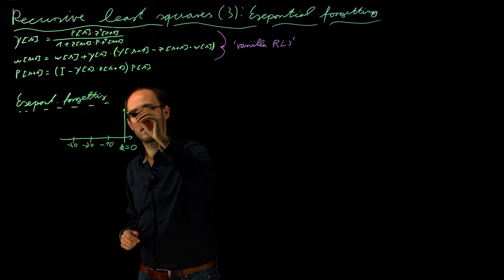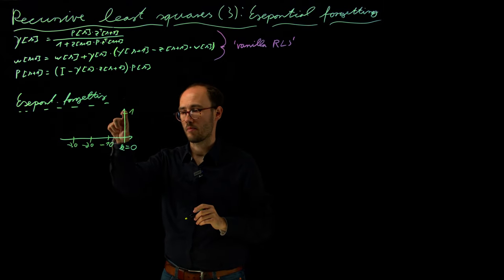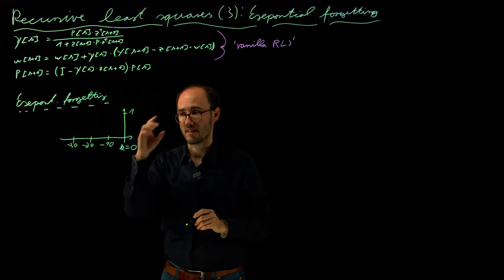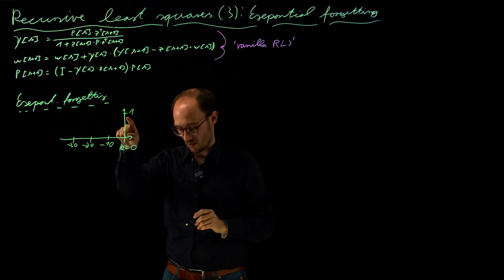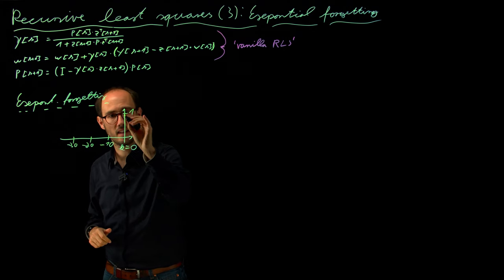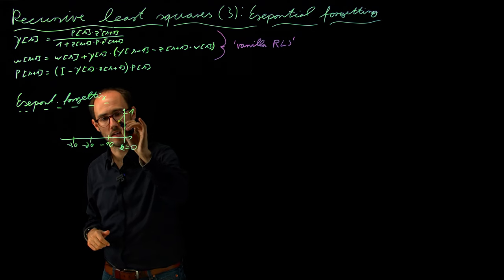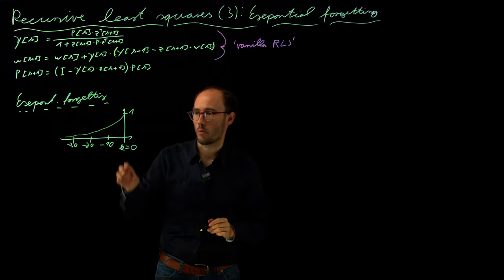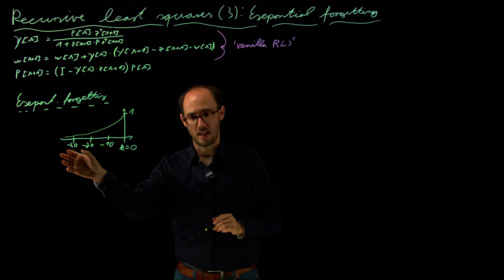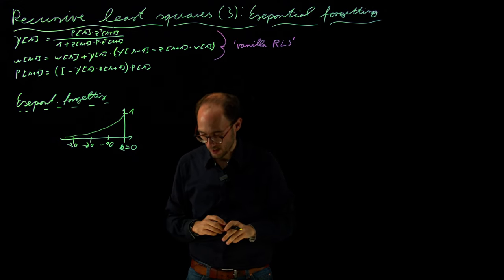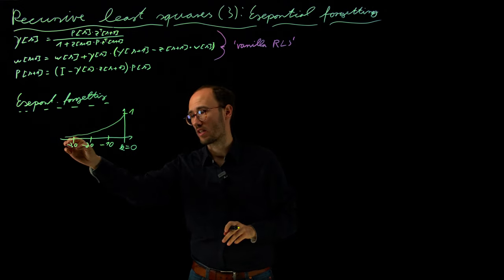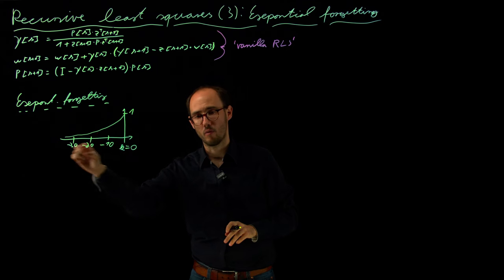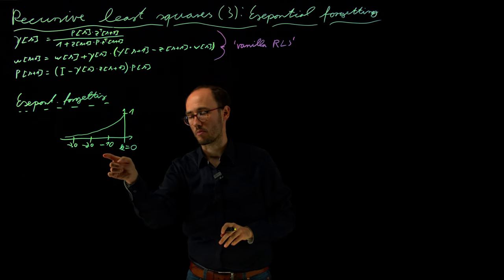And what we do now is we say, okay, we want to weight our data sample at the current time step k equals 0 with a weight of 1, and then over time, or here backwards in time, we exponentially want to weight the previous time steps less. So exponentially decay the weight over time with respect to the previous data samples.